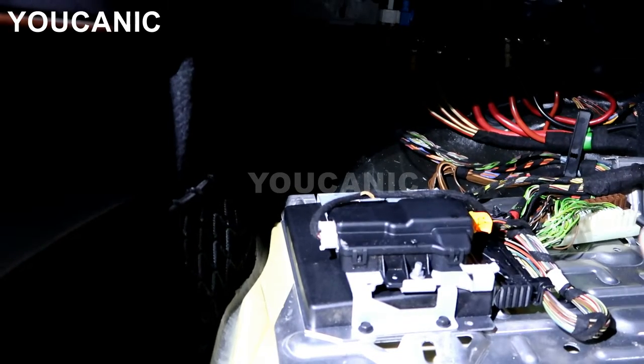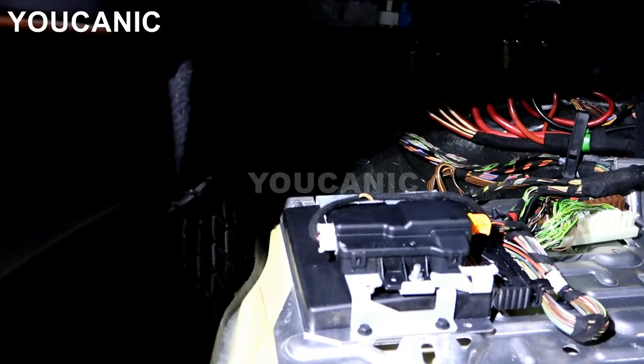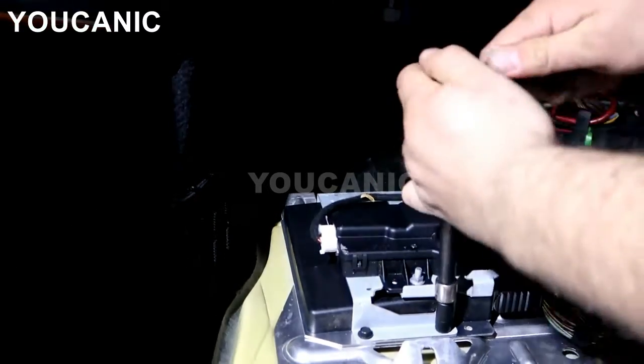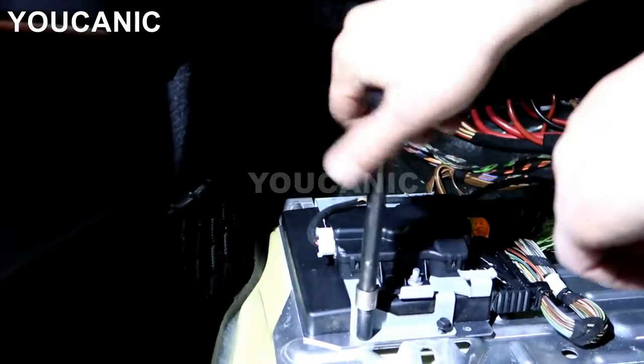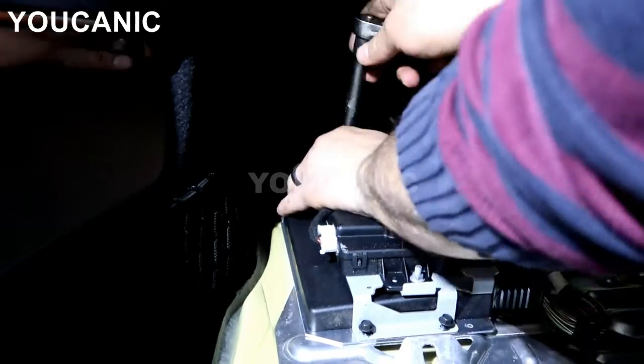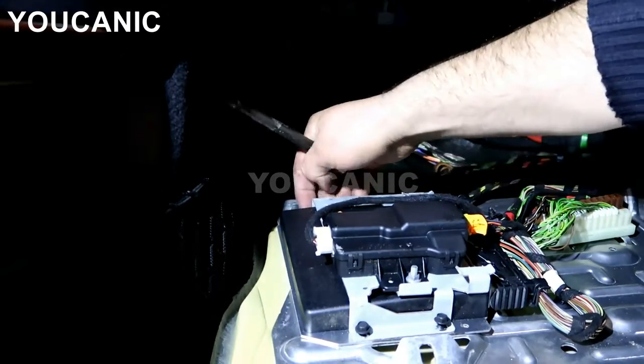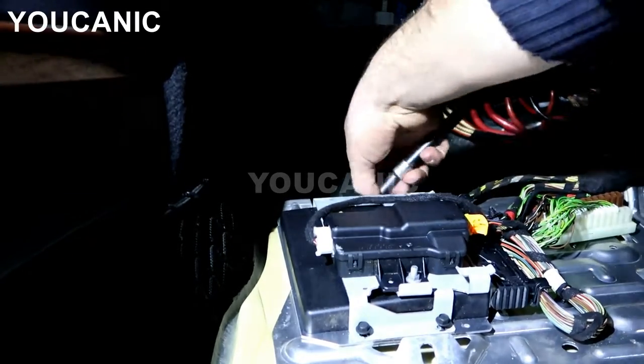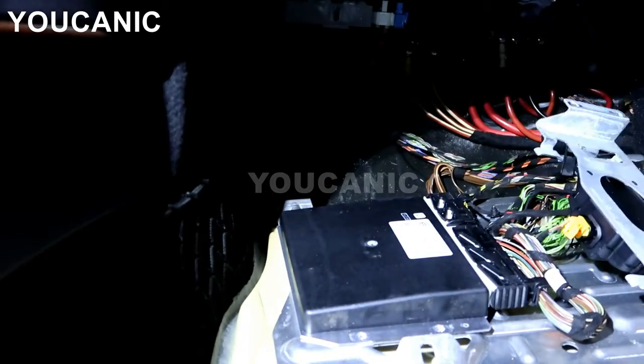We're going to remove this module that's on top of it. We'll just put that to the side. Before we actually remove that, let's remove the four bolts. This unit might come with a frame and we might not have to even take that off. So let's go ahead. Four of those. Let's move this to the side.